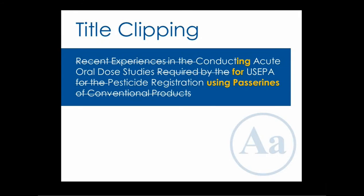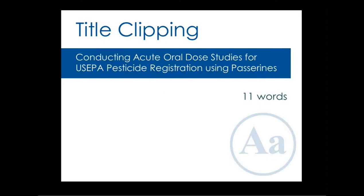So let's get rid of some of the redundant phrases — 'recent experiences in the,' 'required by the,' 'for the registration of' — and we took out 'conventional pesticide products' as a specific detail that might not be required in the title. It seems like a distinction that is moot unless there is room for confusion. And here's a far simpler title. In the abstract, even the authors talk about songbirds, so why not use the common term in the title so it's a quicker read and more likely to catch someone's eye?